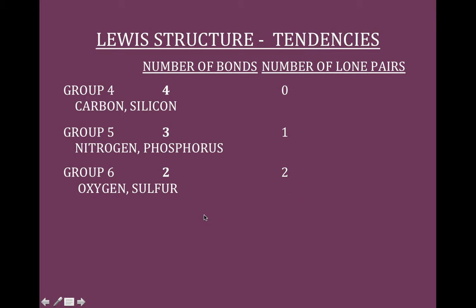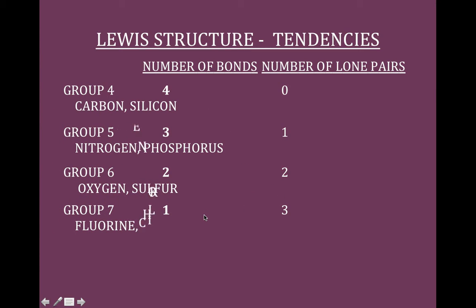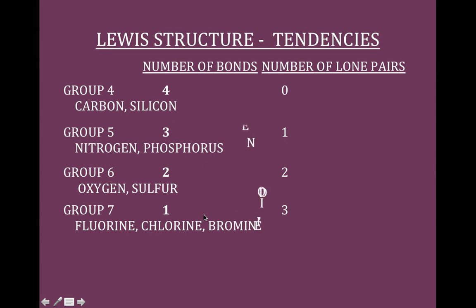So I don't even have to tell you what Group 7 is going to look like. Our halogens, if we drop by one, are only going to have one bond and three lone pairs. Most of the electrons are paired off already, with just one that wants to form a bond.